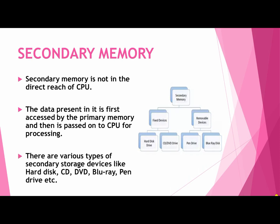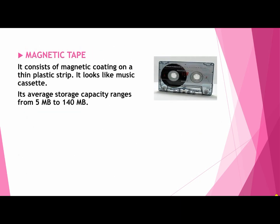There are various types of secondary storage devices like hard disk, CD, DVD, Blu-ray, pen drive and so on. First is magnetic tape. This is your magnetic tape. It consists of a magnetic coating on a thin plastic strip and it looks like a music cassette. Its average storage capacity ranges from 5 MB to 140 MB.